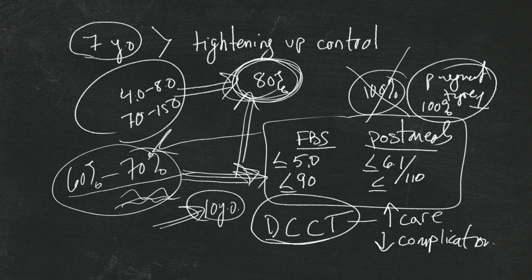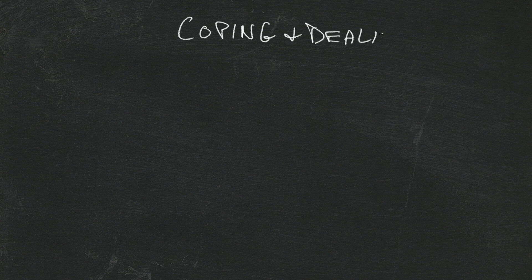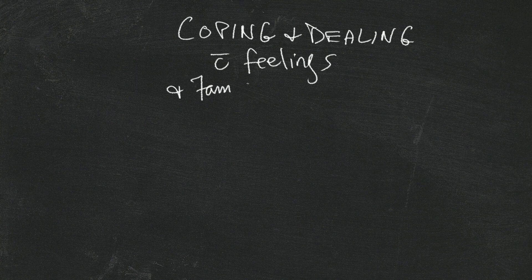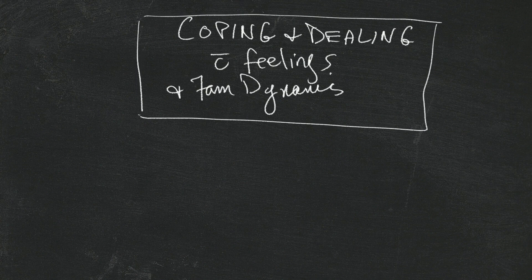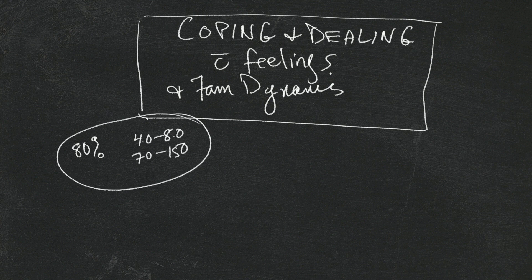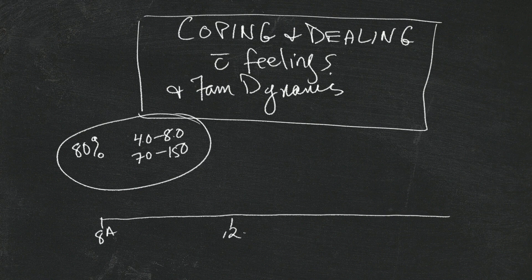That's a theme that runs throughout the entire presentation and informs my entire life as I manage and live with it. It's a constant balancing thing, which gets us to the next topic: coping, dealing with feelings, and family dynamics. Remember we said 80% trying for target zone? That's a lot of work. Now that we have to do what the body has done automatically for years, here's what we have to do on a daily basis.